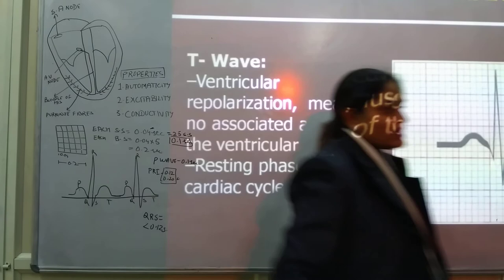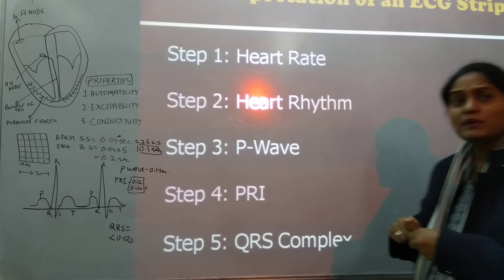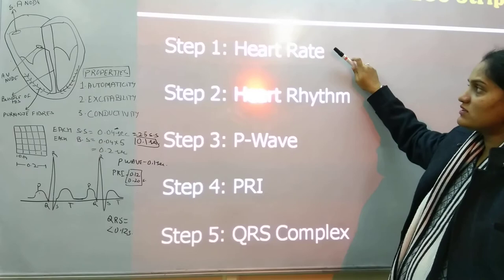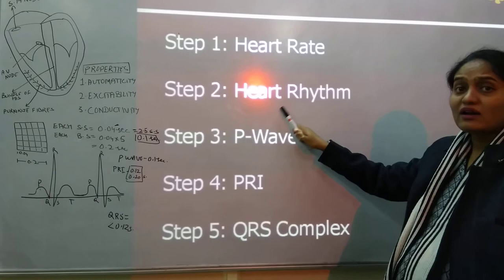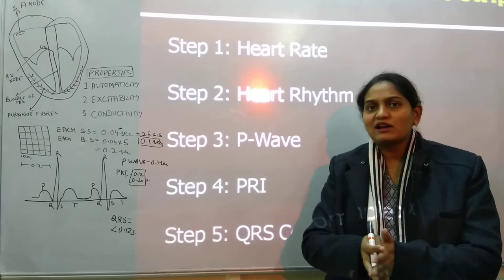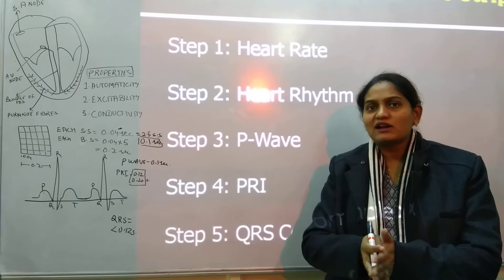Now we will learn the basic interpretation of ECG — what we read in an ECG — using a five-step method. We will study how to note the heart rate from the ECG, how to note the heart rhythm from the ECG strip, how to measure the P wave, and how to measure the PR interval and QRS complex. We will stop here and continue discussing these five parameters in the next class. Thank you.